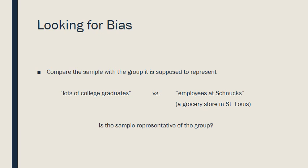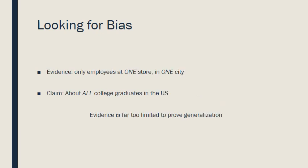So, are employees at Schnucks — a grocery store in St. Louis — representative of college graduates as a whole? The answer is no. The evidence is only about college graduates at one store in one city — very limited geographically and in scope. But the claim is about all college graduates in the United States. We cannot make a generalization about college graduates nationwide from the group working at one store in one city.